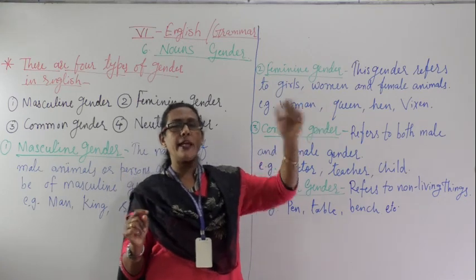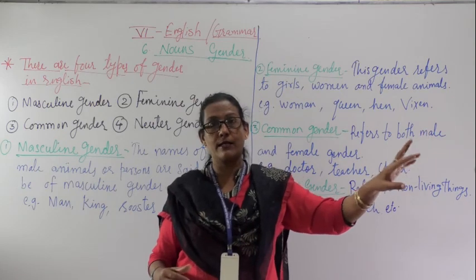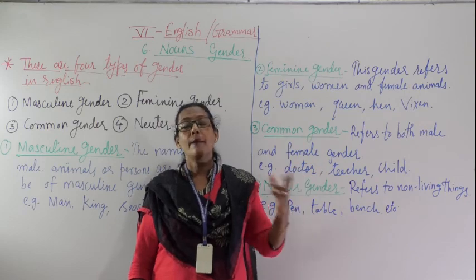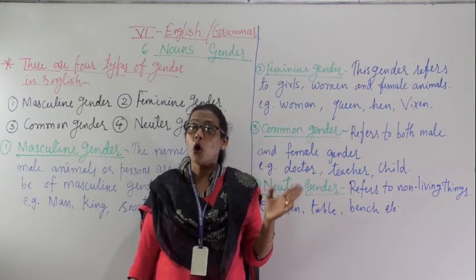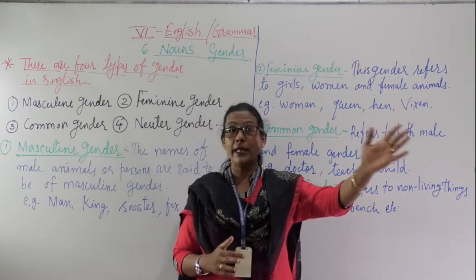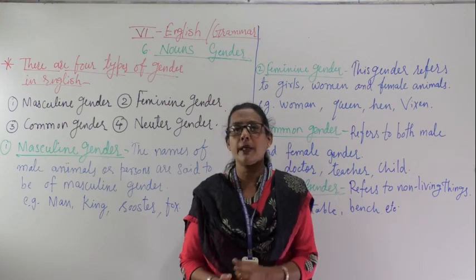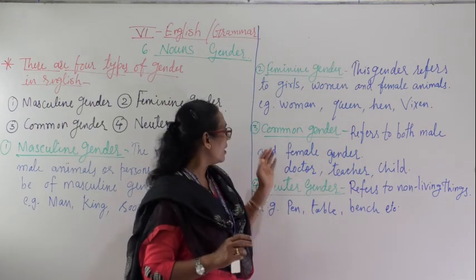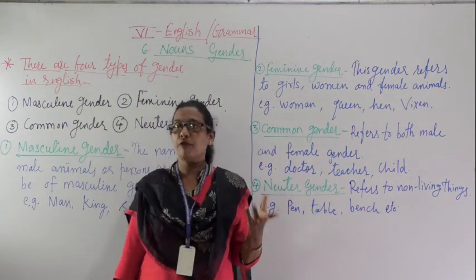Child — 'The child is playing on the ground.' We don't know whether that child is a girl or a boy, male or female, so we say 'that child.' That is Common Gender. In this case, Doctor, Teacher, Child, Orphan, Parents — we don't know what gender they are. 'My parents have come' — father may also be there, or mother may also be there. So this is called Common Gender, which refers to both male and female.